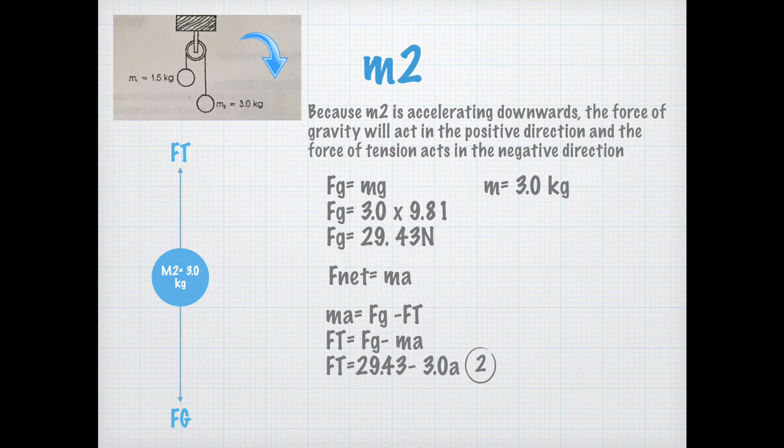So again using Newton's second law to solve for an equation for the force of tension we get f net equals ma. Because now we know the mass is 3 kg and the force of gravity is 29.43 newtons, we get ft equals fg minus ma giving us ft equals 29.43 minus 3.0a. That's equation number 2.